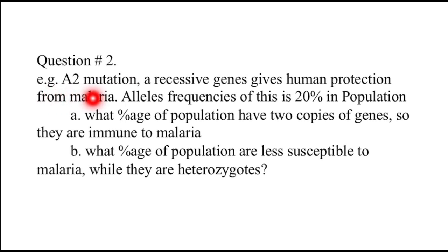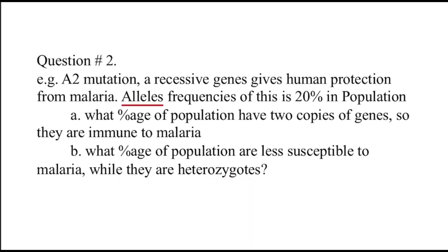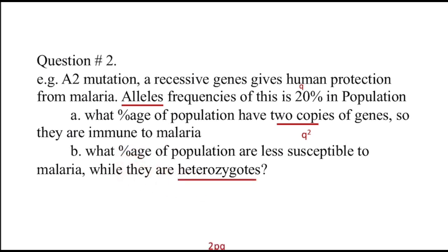Question 2: A recessive gene gives humans protection from malaria. The allele frequency of this gene is 20% in the population. A) What percentage of the population has 2 copies of the gene and is immune to malaria? B) What percentage are less susceptible to malaria because they are heterozygous? The allele frequency of the recessive allele Q is given as 20%. To find Q: 20/100 = 0.2, so Q = 0.2. As P + Q = 1, P = 0.8.